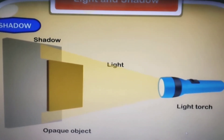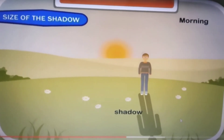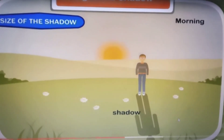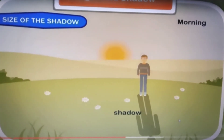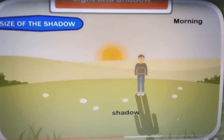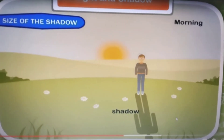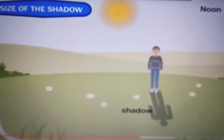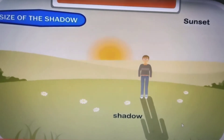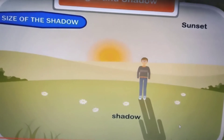Now we are going to discuss about the size of the shadow. To determine the size of the shadow, you can stand in the sun once in the morning, then in the afternoon, and then in the evening, and look at the shadow on the ground. In the morning your shadow is big, in the afternoon it is smaller, but as the sun sets, the shadow size keeps on increasing.